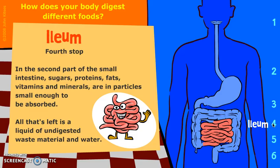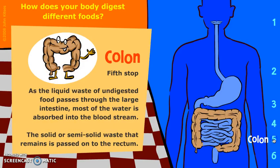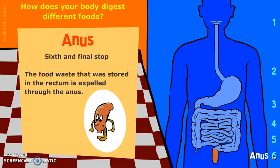Once all of the nutrients are absorbed, what's left over is a liquid of undigestible material — often fiber and some water. Food then moves into the colon or the large intestine, where the liquid waste of undigested food and water passes through, and most of the water is reabsorbed into the bloodstream and passed onto the kidneys to be excreted as urine. The semi-solid waste collects in the colon and is passed onto the rectum for expulsion within one to two days. The final stop on our journey is the anus, where food waste stored in the rectum is expelled — the last stop on our journey of the digestive system.